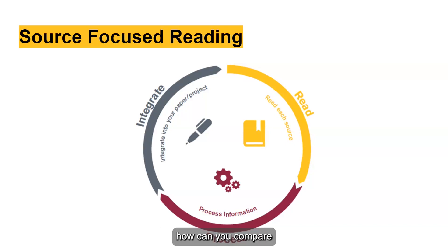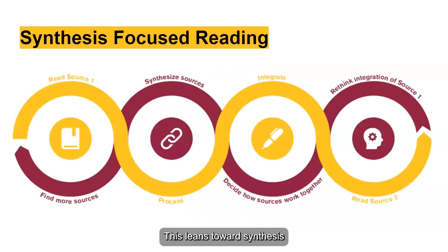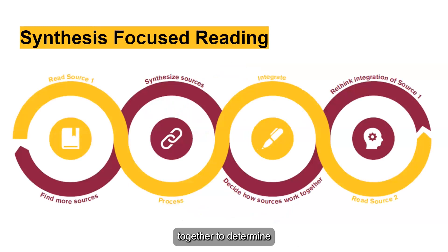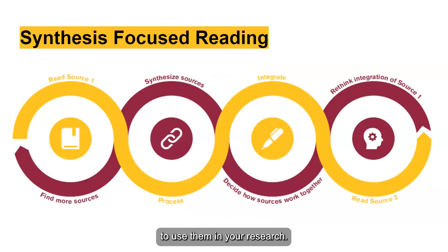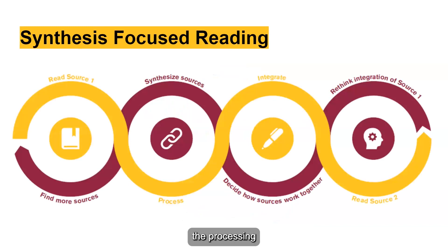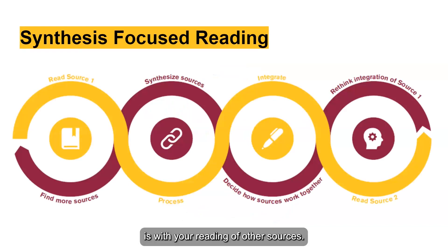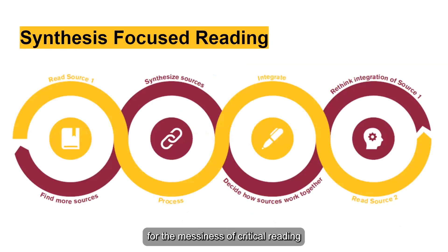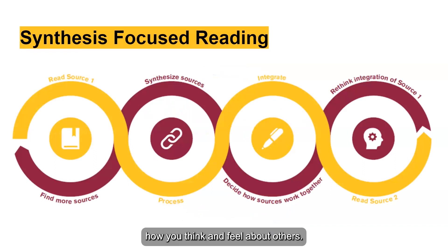If so, how can you compare and contrast the sources? This leans towards synthesis-focused reading, which is where you bring sources together to determine what kind of information they provide and how you would want to use them in your research. You can see how integrated the reading, the processing, and the integration into your paper is with your reading of other sources. This process accounts for the messiness of critical reading and how reading one source may impact how you think and feel about others.